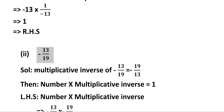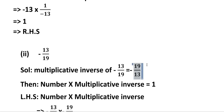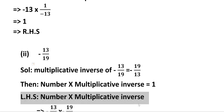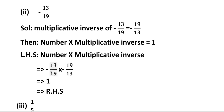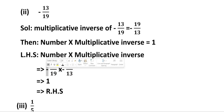Second solution: minus 13 by 19. Multiplicative inverse of minus 13 by 19 is equal to minus 19 by 13 — reciprocal, so reverse it. Then number into multiplicative inverse is equal to 1. LHS: minus 13 by 19 into minus 19 by 13. 13 cancels, 19 cancels. Minus into minus is equal to plus, so total value is 1, which equals RHS. This is the multiplicative inverse.